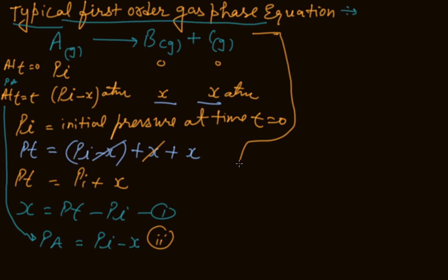PA equals Pi minus (PT minus Pi), which becomes PA equals 2Pi minus PT.